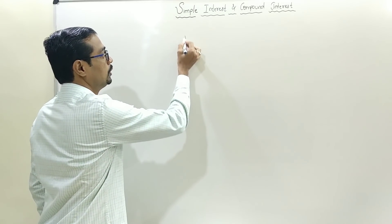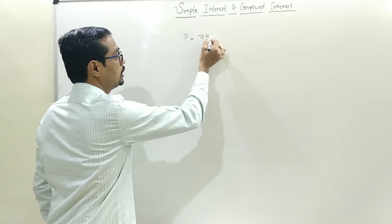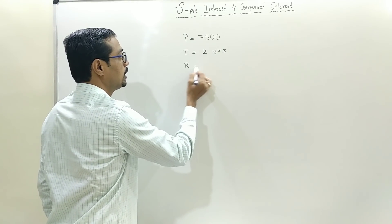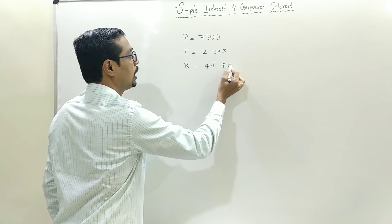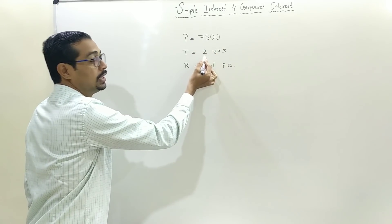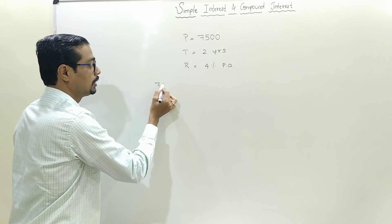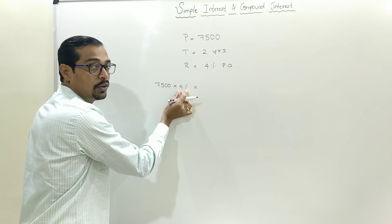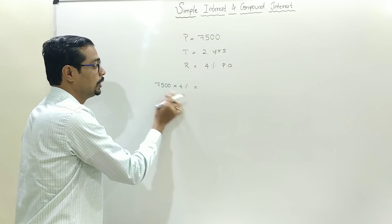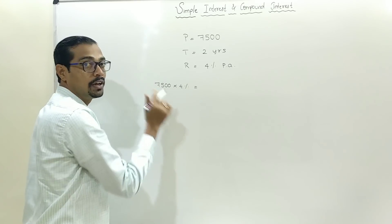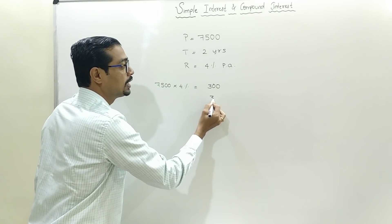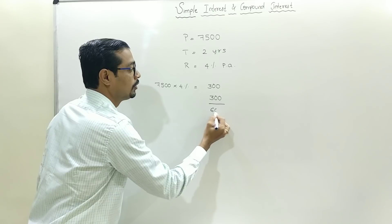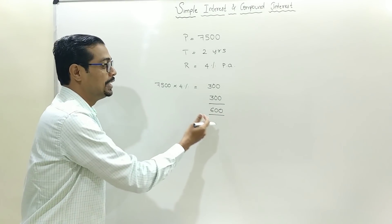Let us assume principal 7500, time 2 years, rate 4% per annum. 7500, 4% — percentage means divided by 100. Cancel, 75 times 4 are 300. Write it 2 times, reason: duration is 2 years. So 600 is your simple interest.